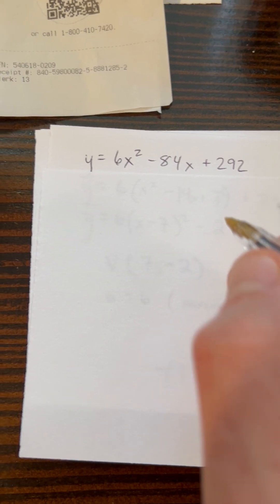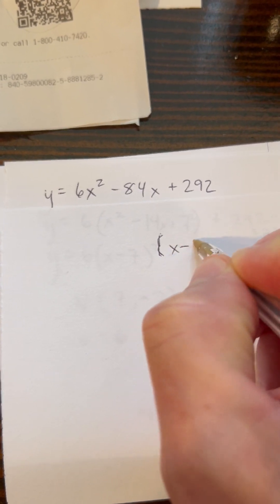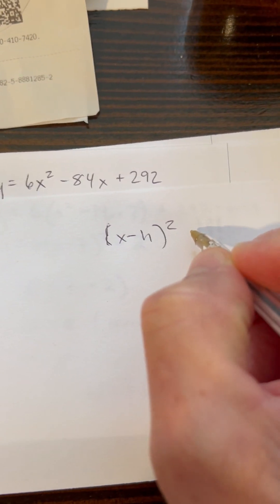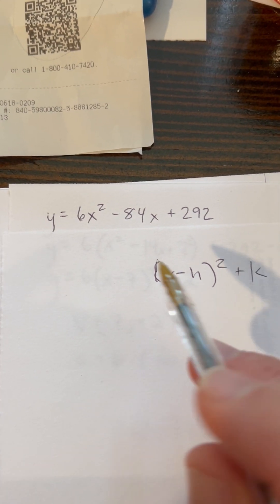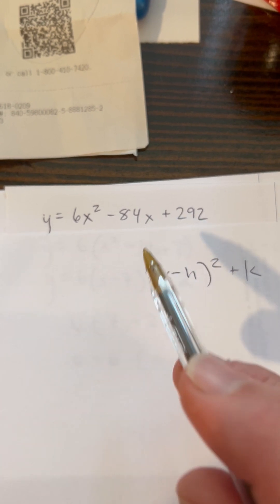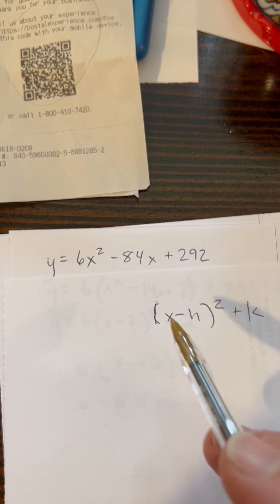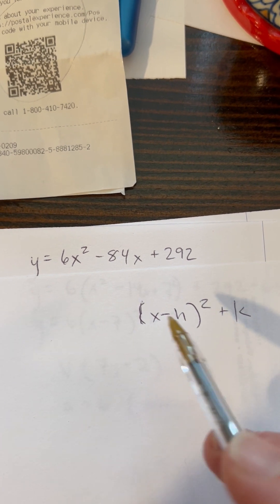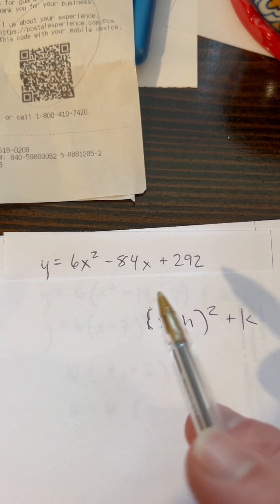We need, remember, to get this in the form of (x - h)² + k. That's what we're looking for. So I need to force these two pieces here plus a third into a trinomial that is the result of a binomial squared.